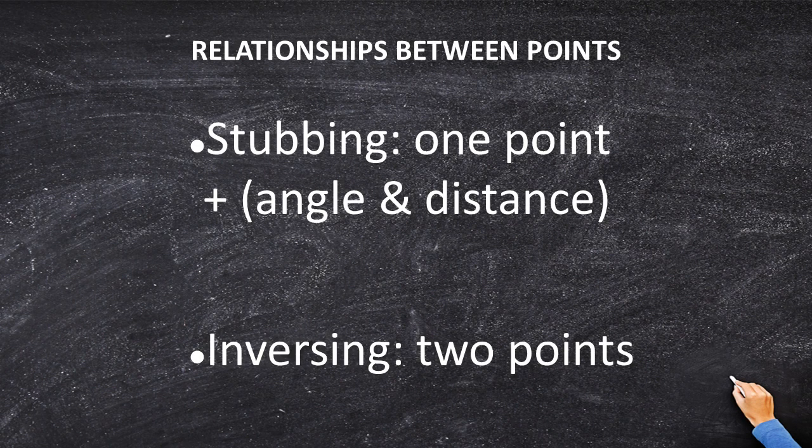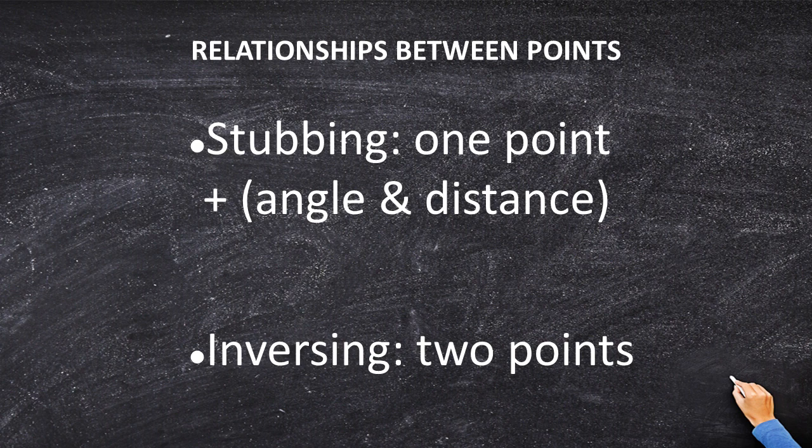Another important thing to know is how to do inversing. Inversing is where you have the coordinates of two points, and based on these two sets of coordinates, you're going to compute the azimuth and distance between the two points. Now that's very different from stubbing. Stubbing is where you have one point and you have an angle and distance, and you compute the location of the second point. So we're inversing.